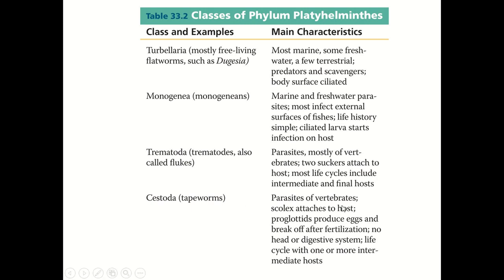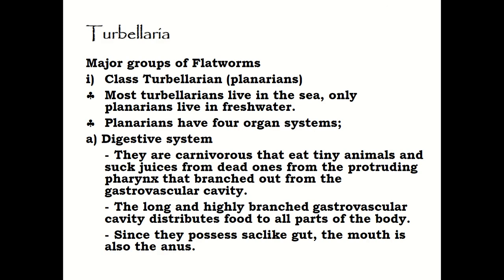For Cestoda, they are parasites of vertebrates. They have a scolex that attaches to the host, and their proglottids break off after fertilization. They have no head or digestive system — very simple. Their life cycle includes one or more intermediate hosts.